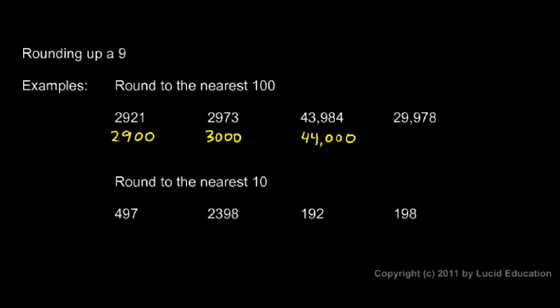You can think of this as 440 hundreds. Instead of rounding down to 439 hundreds, we round up to 440 hundreds, which is 44,000.